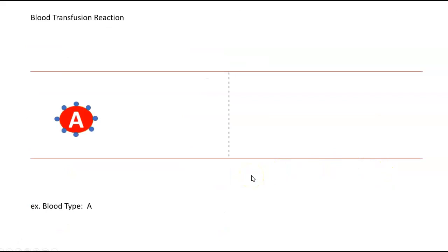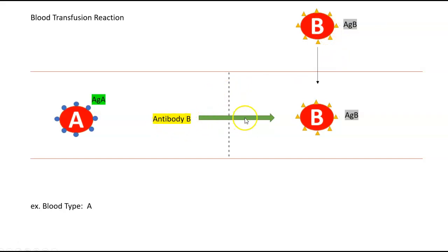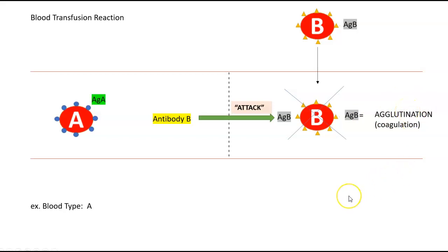Here's a blood transfusion reaction example. This is blood type A — we know it has antigen A and antibody B. Antibody B's primary job is to kill B antigens. If we donate blood type B — antigen B — into this blood vessel, antibody B is going to attack those surface antigens. That creates a clotting or agglutination reaction, which coagulates the blood, making a big mess and being very detrimental to health. This is called a transfusion reaction, which is why blood typing before donating or receiving blood is critical.